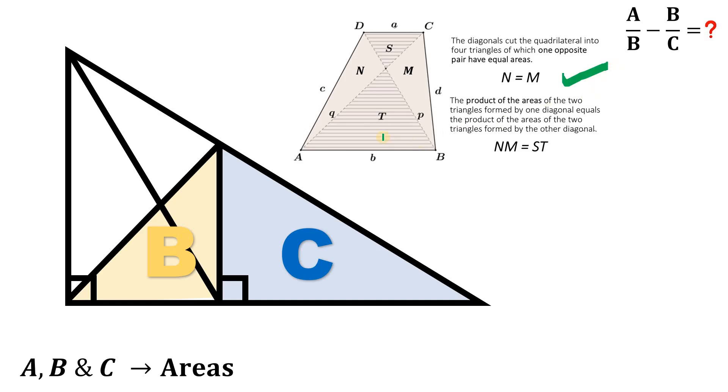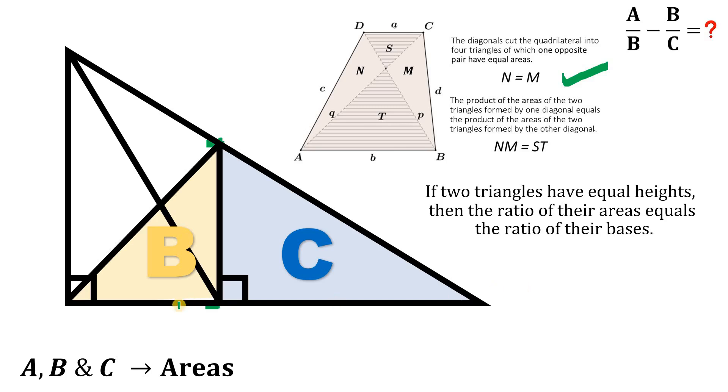And now, another concept that we can use is this concept. If two triangles have equal heights, then the ratio of their areas equals the ratio of their bases. We have two triangles with the same height for sure. Therefore, the ratio of their areas equals the ratio of their bases.